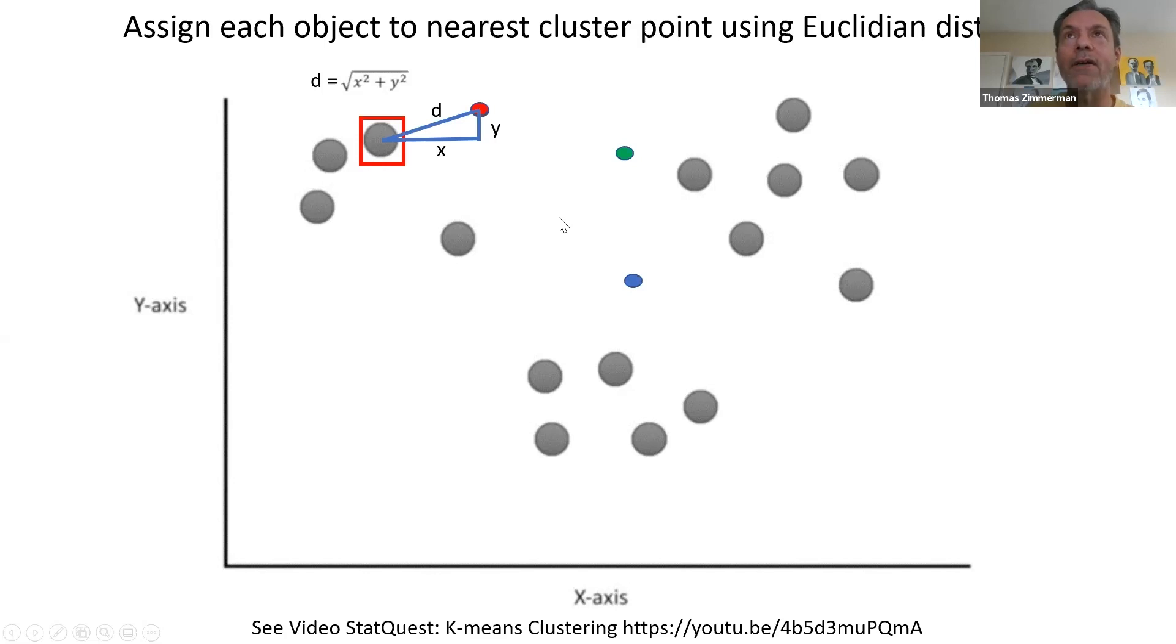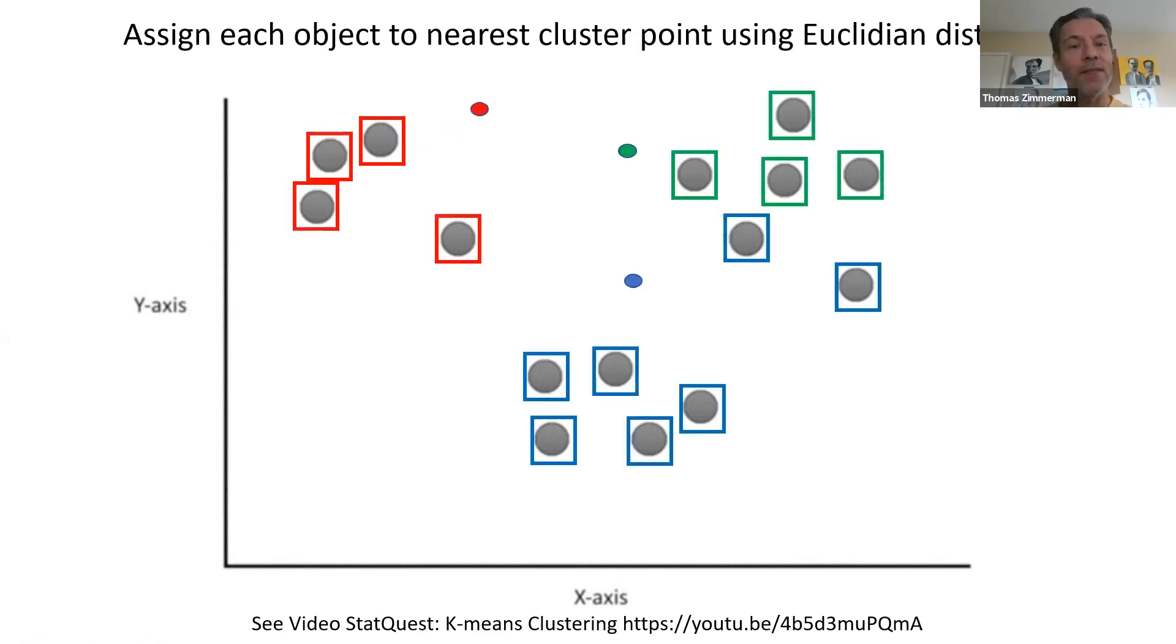So if you fill this out, boom. Does this make sense? I went through every object and I figured out which one was closest to it and I assigned it to that group. And I used my ruler for these two. This object is closer to the blue than the green and same with that guy.